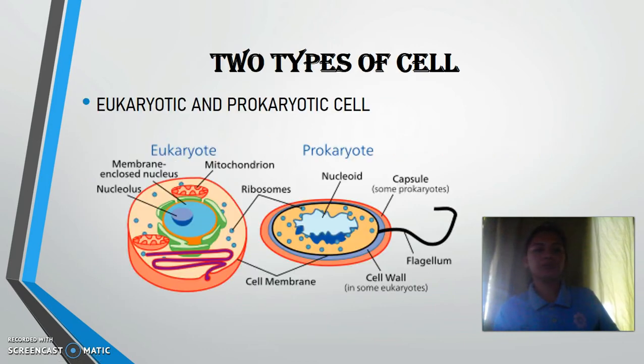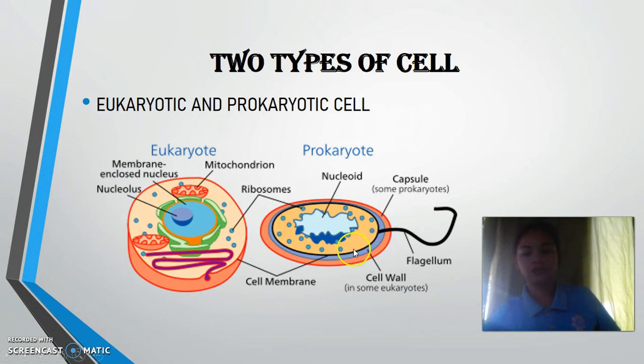There are two types of cells: the eukaryotic cell and the prokaryotic cell.